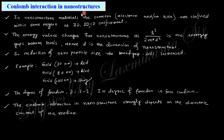Let's start with Coulomb interaction in nanostructures. In a nanostructure, electrons and holes are confined within some regions, so there is a modification in the force and the potential in the Coulomb interaction. The degree of freedom can be expressed as d minus i, where i is the degree of freedom in the free condition. As the size of the material is reduced, the color also changes, so the absorption and reflection spectra of nanoparticles change with the size of the particle.